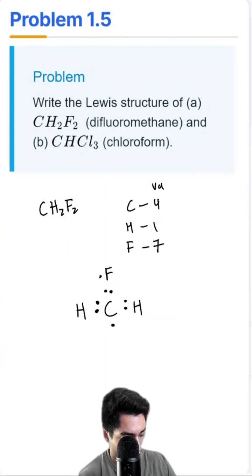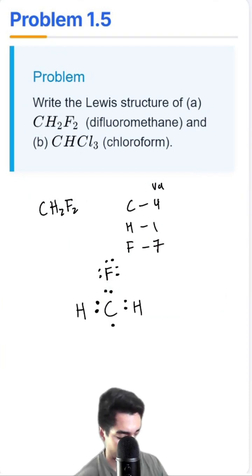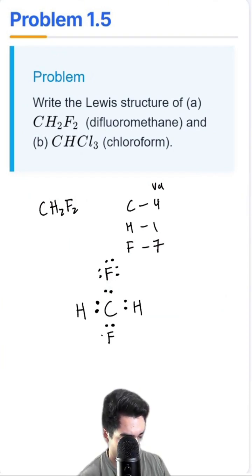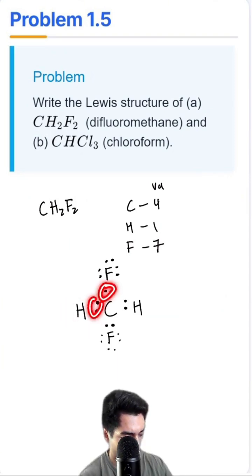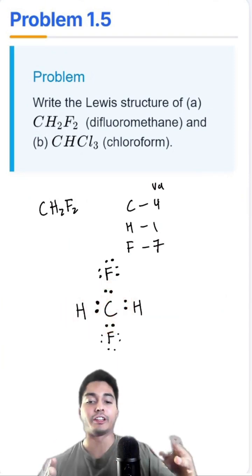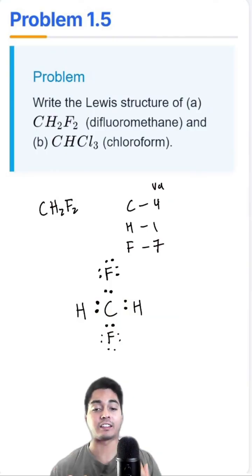Where can you guess the fluorine is going to be? Fluorine is going to be right up here — it has 7 valence electrons: 1, 2, 3, 4, 5, 6, 7 — and a new bond forms here. Then down here we have another fluorine with 7 valence electrons. So now carbon has a total of 2, 4, 6, 8 — which is good. 8 is a very magic number in chemistry; it means the octet is complete.